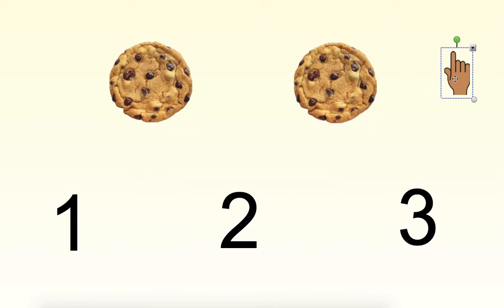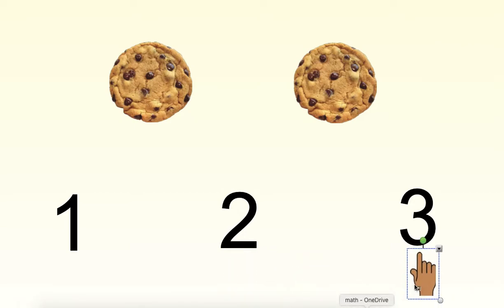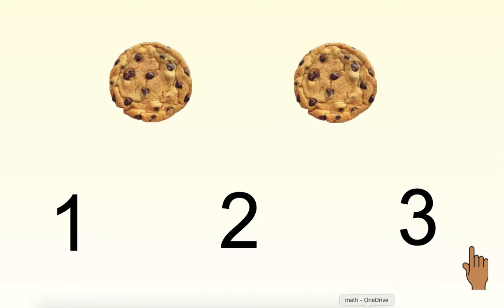Point to the number that shows two. Here are all of your choices. Did you point to this one? This is the number two. There are two cookies on this page.